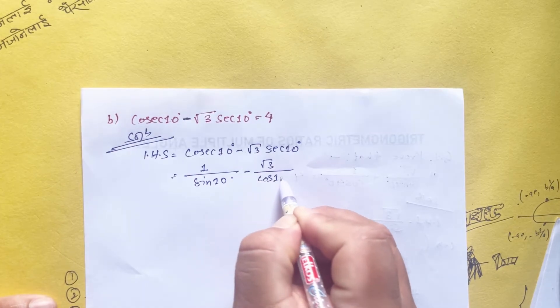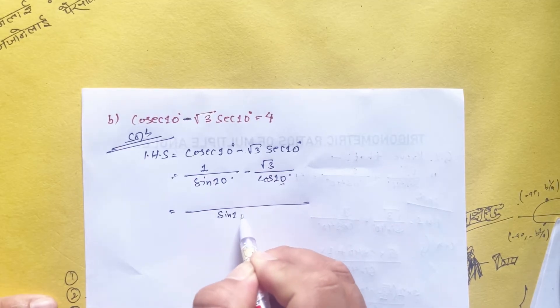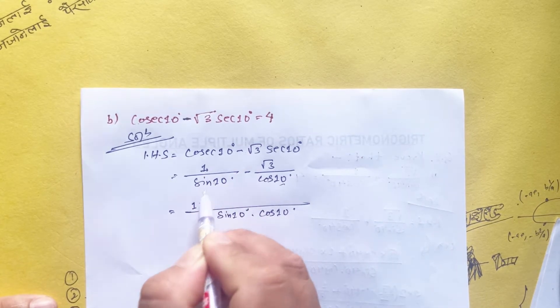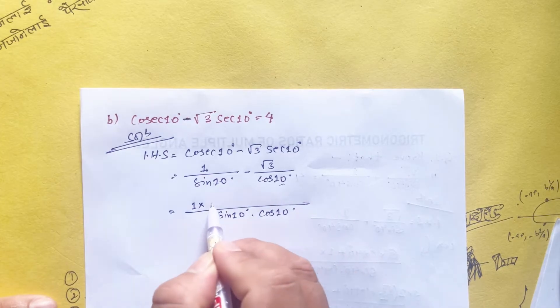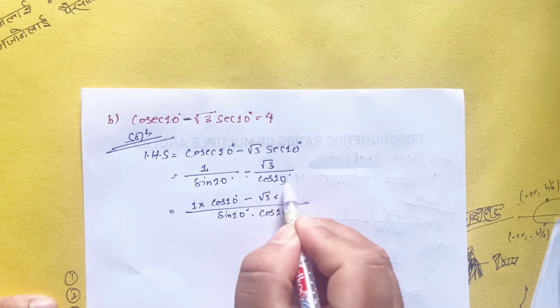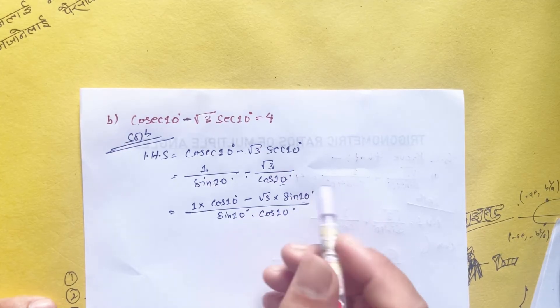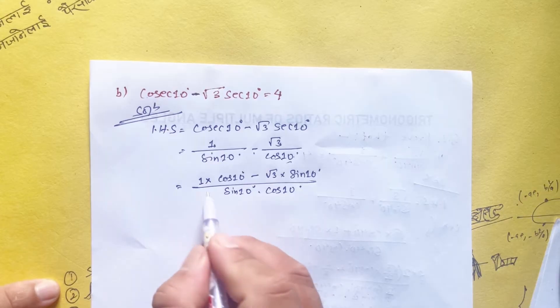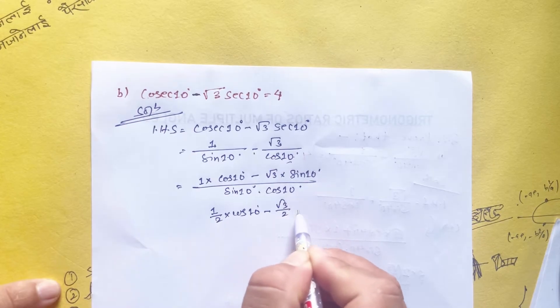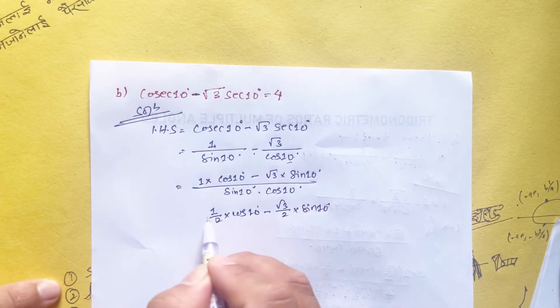This equals cos 10 degree minus √3 sin 10 degree over sin 10 cos 10. Taking LCM of sin 10 and cos 10, the denominator is sin 10 cos 10.